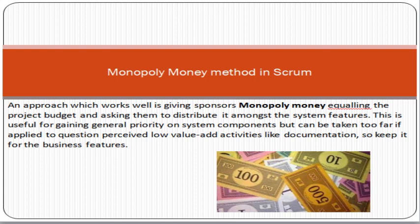For example, if your project budget is five thousand dollars, you take the same amount in fake or monopoly money and give it to your project sponsor. Suppose you have five features available — such as payments, customer sign-up, and product catalog. You give the fake money to the project sponsors and ask them to indicate how much money they want to spend on each of the available features.